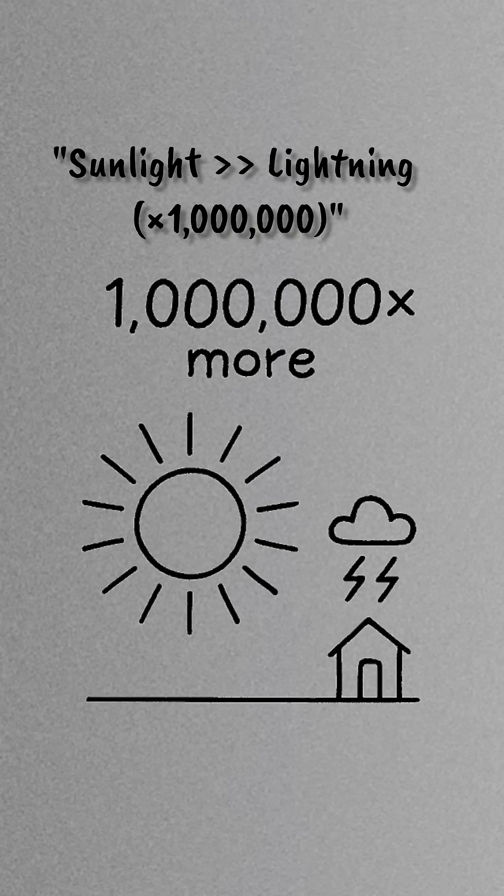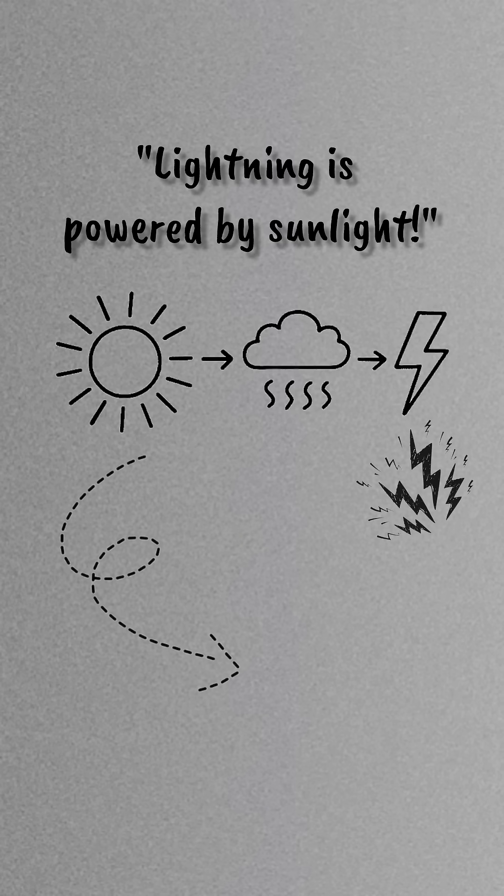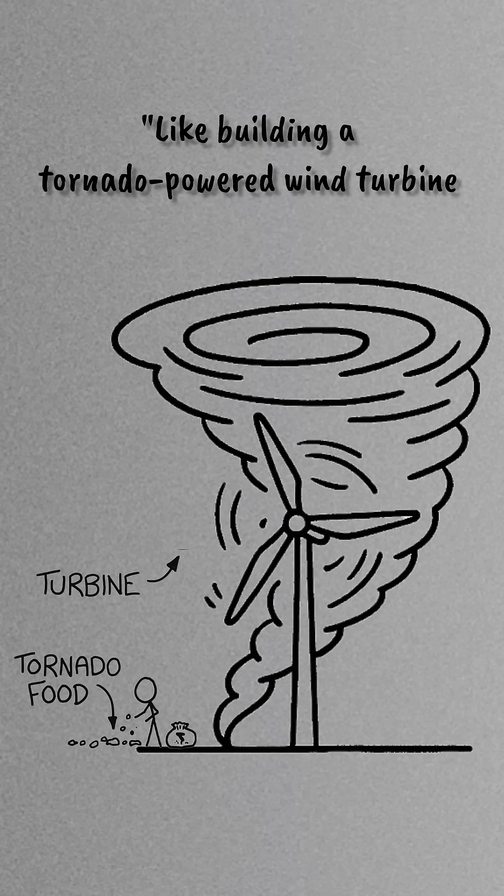This makes sense because ultimately lightning is still powered by sunlight. Generating power from lightning is kind of like building a wind turbine powered by tornadoes—impractical, although that would also be very cool.